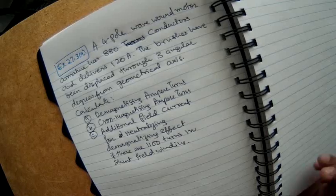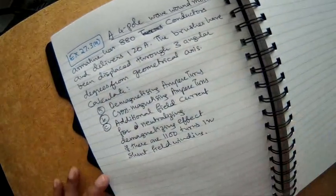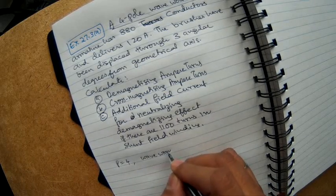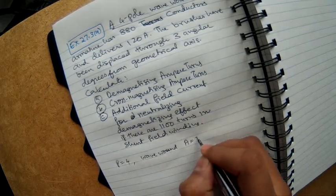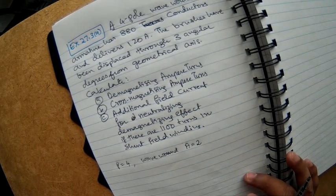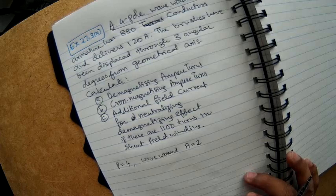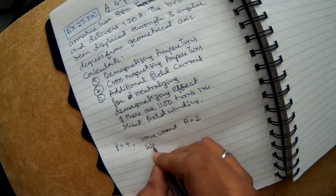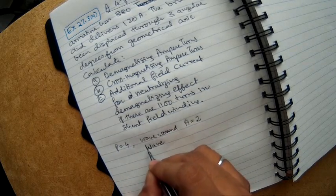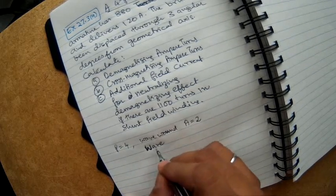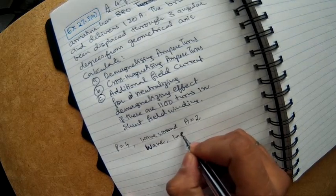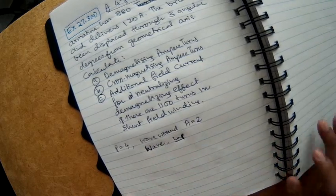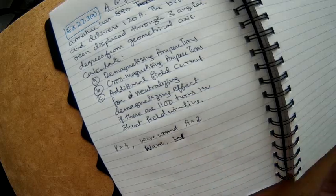So a 4 pole wave wound motor, so P equal to 4. Now in a wave wound motor the number of parallel paths will be 2. So for a lap winding the number of parallel paths will be equal to the number of poles and for a wave winding there will be 2 parallel paths. How do you remember this? It is a small trick. So if you look at the word wave, it has 2 sharp edges, so you can consider it as 2 parallel paths. If you look at lap, it has P in it, so that P signifies that the parallel paths is equal to the number of poles. So A equal to P, something like that. So it is just a trick to remember.